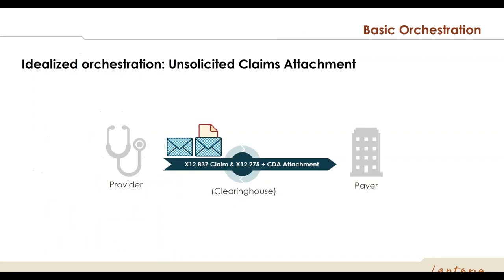Here is a basic orchestration for an unsolicited attachment scenario. The provider is submitting a claim and simultaneously knows that this particular kind of claim requires supporting documentation, so in addition to sending the X12 837 claim, they also send an X12 275 transaction with a CDA-based attachment inside. This way, when the claim is submitted, the payer has everything they need to fully adjudicate and process the claim appropriately.